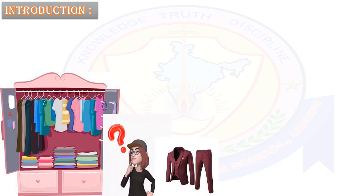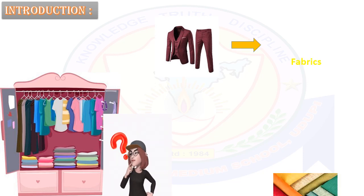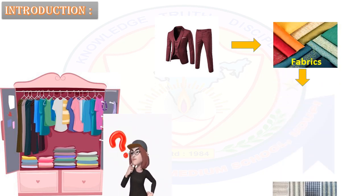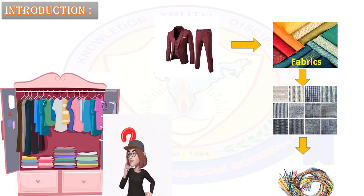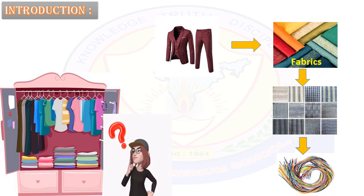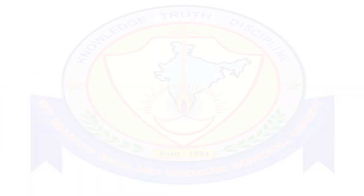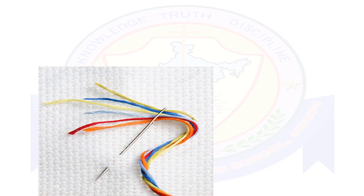The clothes are made of fabrics, and fabrics are made of fibers. A fiber is basically a string made of some material. Have you ever tried to thread a needle? Sometimes the end of the thread is separated into a few thin strands — those thin strands are fibers.